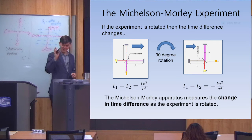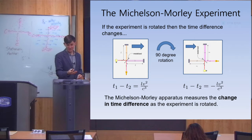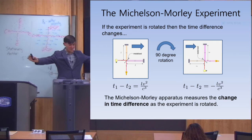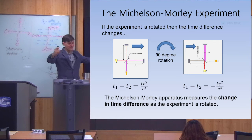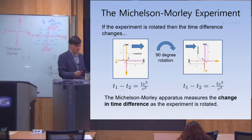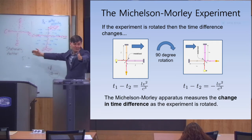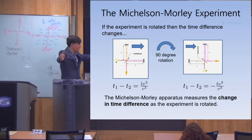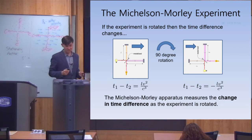If you rotate the apparatus all the way around, you change the time difference between the two paths T1 and T2 — it changes from plus to minus. What the experiment does is measure the change in time difference as you rotate. If the ether is stationary then both paths would be the same, corresponding to no time difference. But if the ether is moving then there is a change in time difference.